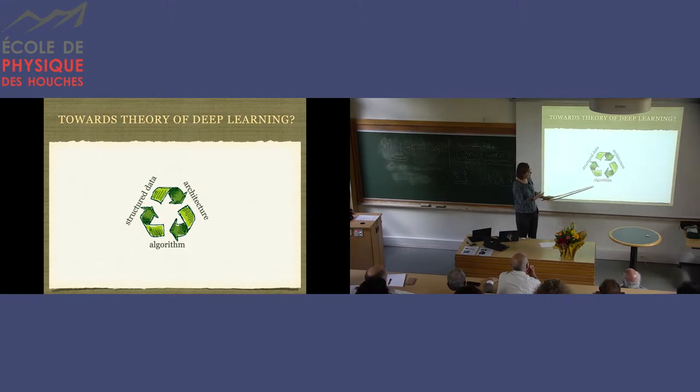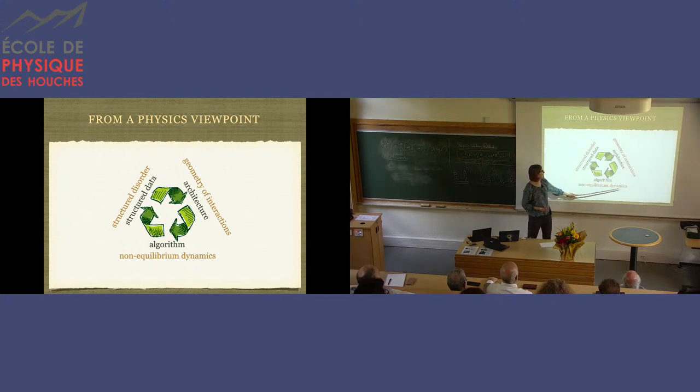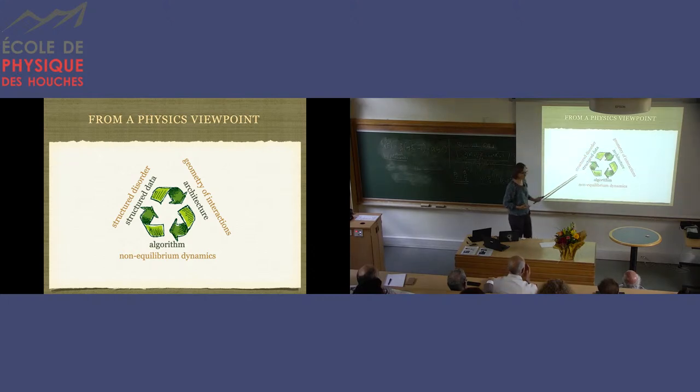And the algorithm that I knew how to analyze here was this TAP Anderson Palmer based kind of message passing algorithm. But I told you that in practice, everybody just runs gradient descent. So from the physics point of view, what this means is that, and what counts is kind of the three together and the interplay between them. From the physics point of view, it means that you need to solve a problem, a non-equilibrium dynamics in a problem that has a structured disorder and the architecture encodes the geometry of the interactions and are kind of complicated.